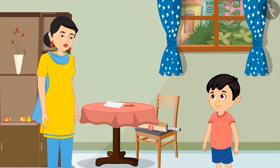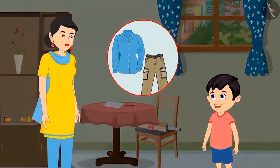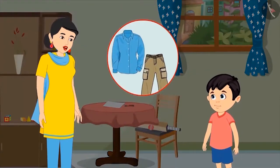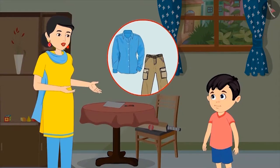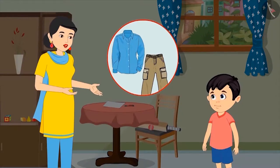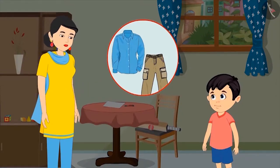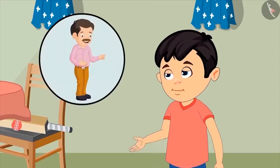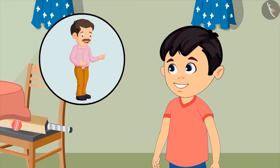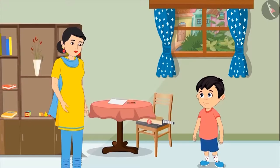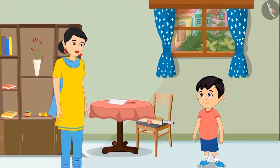Mom asks if Chotu can think of more such pairs. Chotu suggests, 'Pant and shirt?' Mom confirms that pant and shirt are also a pair, then asks Chotu to explain why. Chotu says, 'Yes, we wear pant and shirt together, so both of them are in a pair. Isn't it, Mom?' Mom praises him: 'Yes, Chotu, very good! Come on now, quickly get ready for your class, otherwise you will get late.'